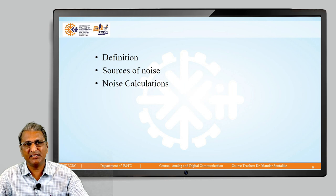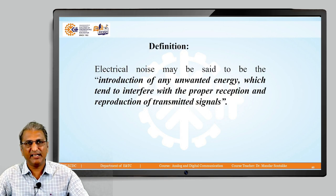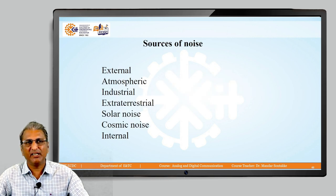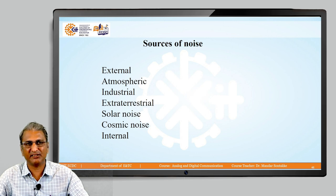Before starting with the classification, we discuss the definition, the different sources of noise, and based on these we have some noise calculations. The technical definition of noise: electrical noise may be said to be the introduction of any unwanted energy which tends to interfere with the proper reception and reproduction of transmitted signals. Different sources of noise are external, atmospheric, industrial, extraterrestrial, solar noise, cosmic noise, and internal noise. The first six are related to external noise and the last one, which is inside the system, is called internal noise.